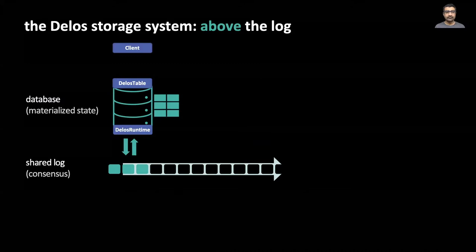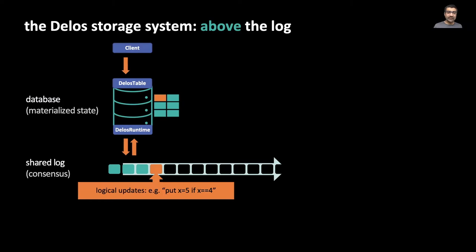Each Delos server consists of two layers, a Delos runtime at the bottom that interacts with the shared log, and a top layer that exposes a particular API to clients. In this case, a table. When the client issues a put against the table, the Delos table layer relays it to the runtime, which appends it to the log without executing it. The update is then played back by the server in the shared log's total order and applied to the local copy of state. What is stored in the shared log is a logical command, for example, a conditional put against the table store.